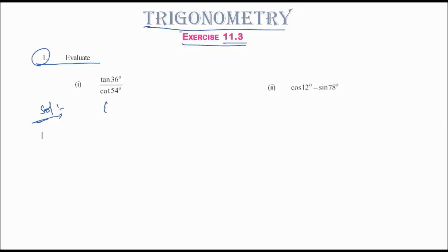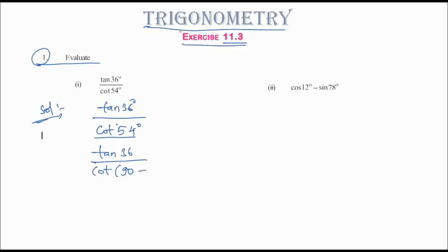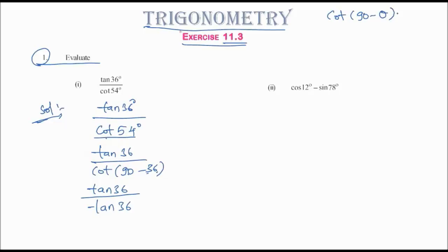First question: tan 36° divided by cot 54°. We can write cot 54° as cot of (90° - 36°). Using the formula cot(90° - θ) = tan θ, we get tan 36° divided by tan 36°.